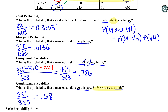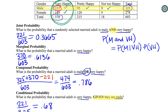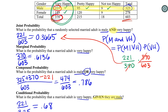Male given very happy is actually the opposite of the one we found before. So if we know somebody is very happy, we know we're in that category. Given very happy — the probability that they're male — that is our 221, all out of that 370. In order to be there, we needed to first have a very happy person. The probability of very happy is those 370 people out of all 603. Those would cancel, leaving us with just 221 over 603.